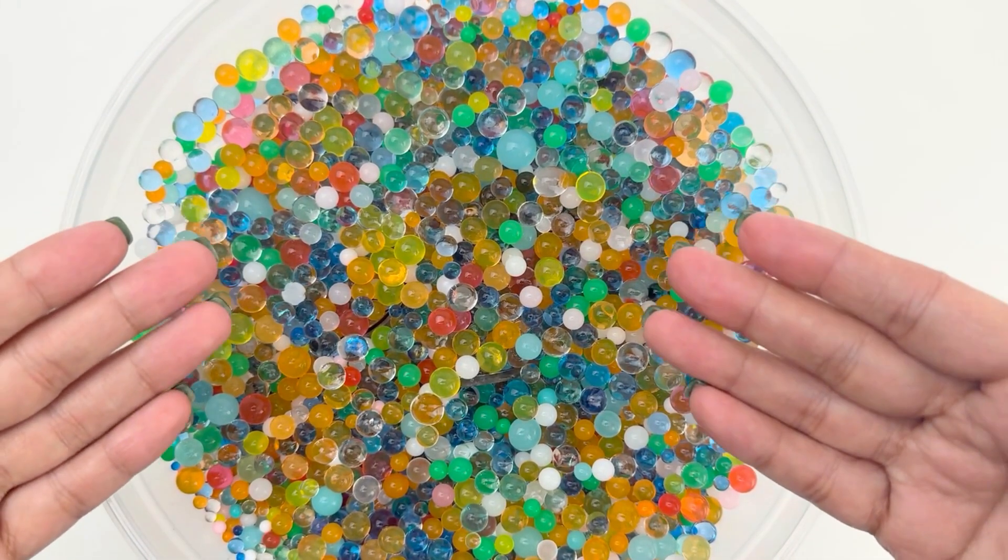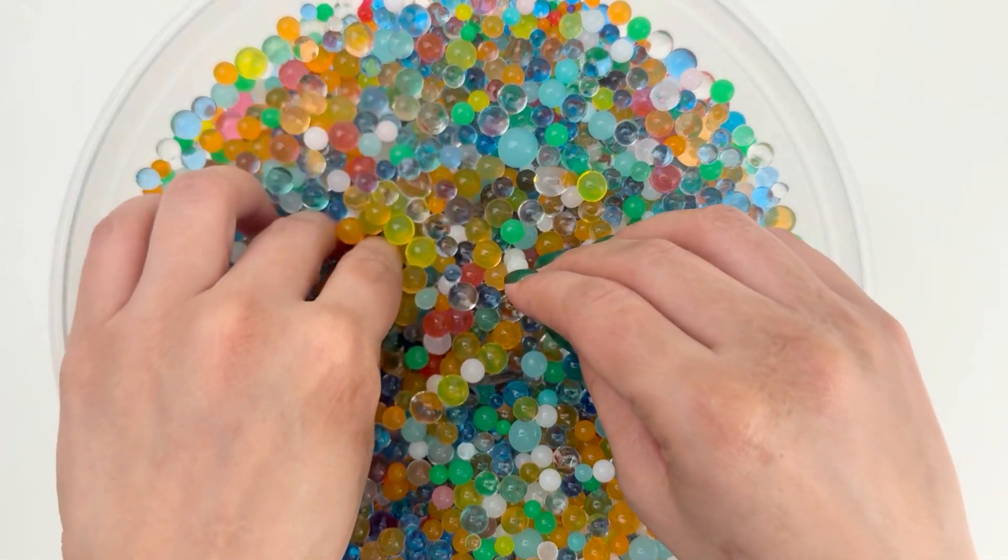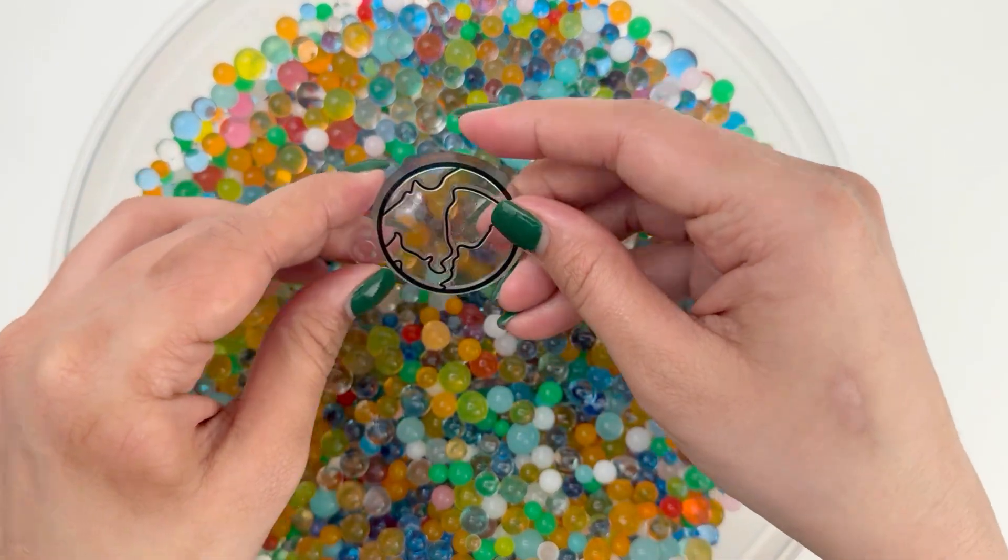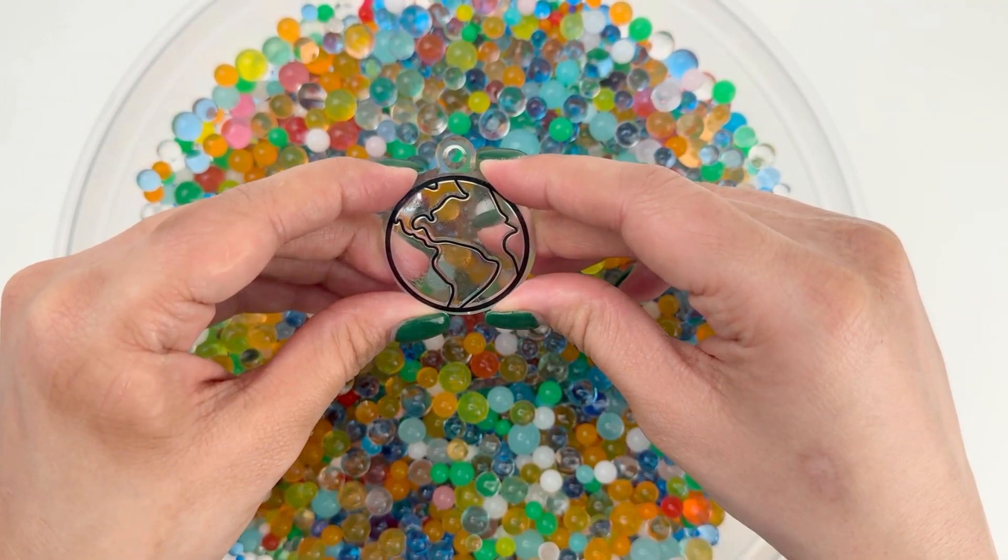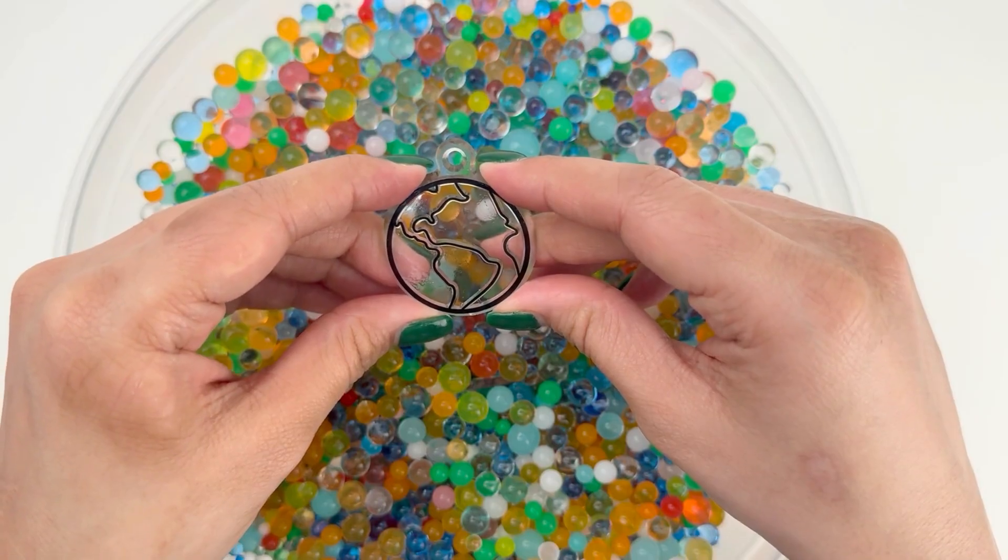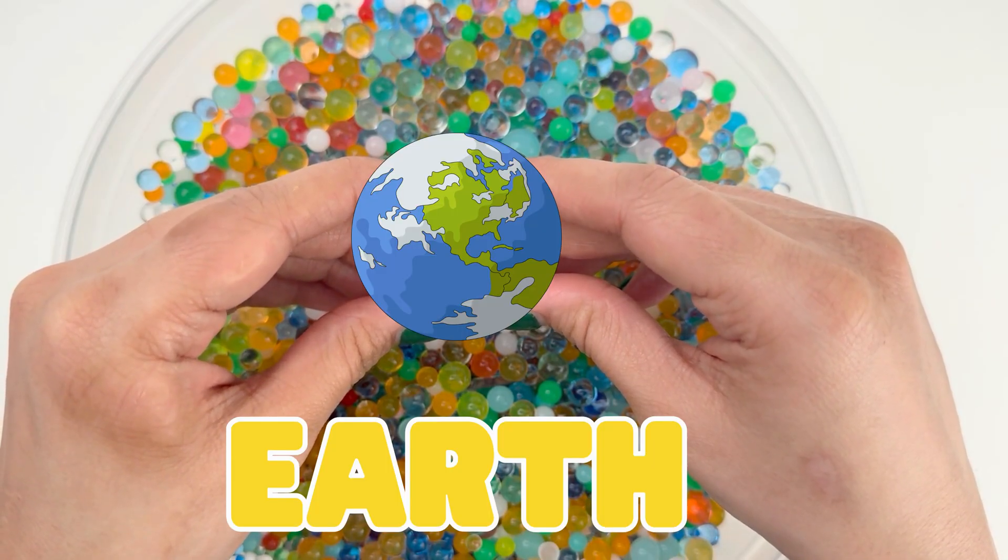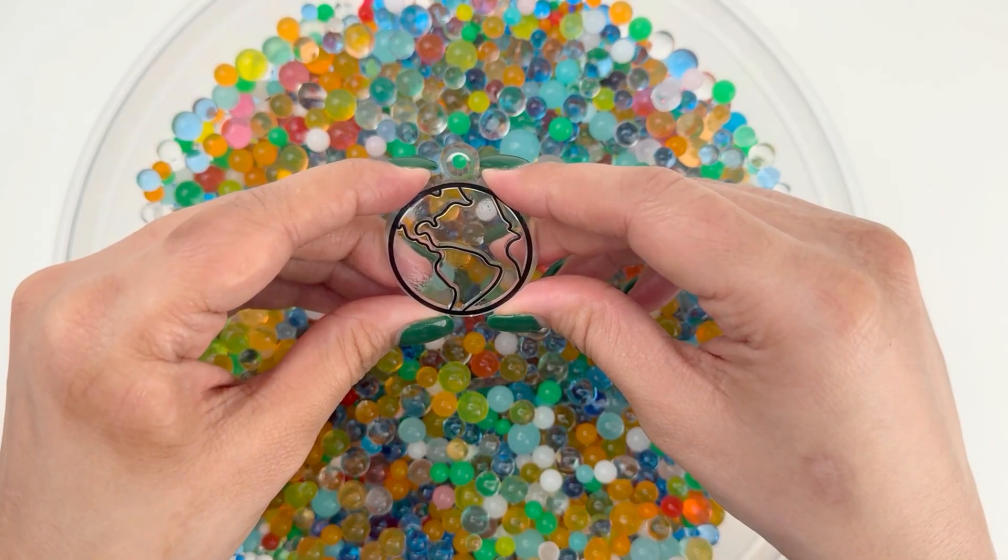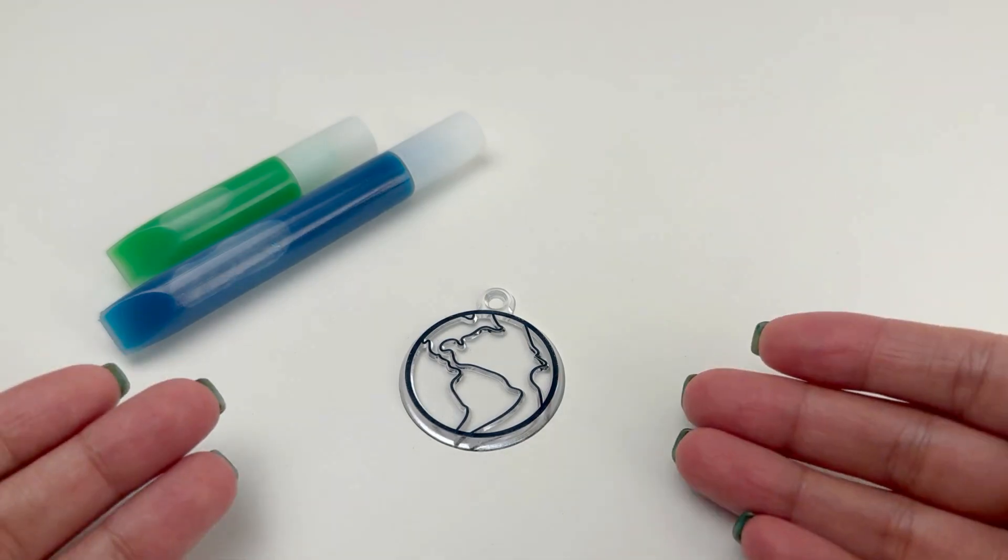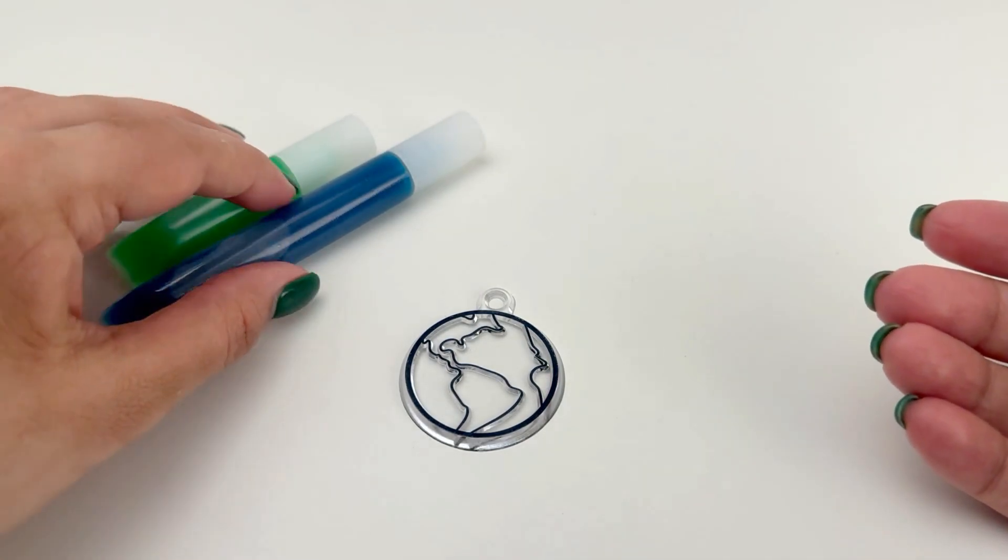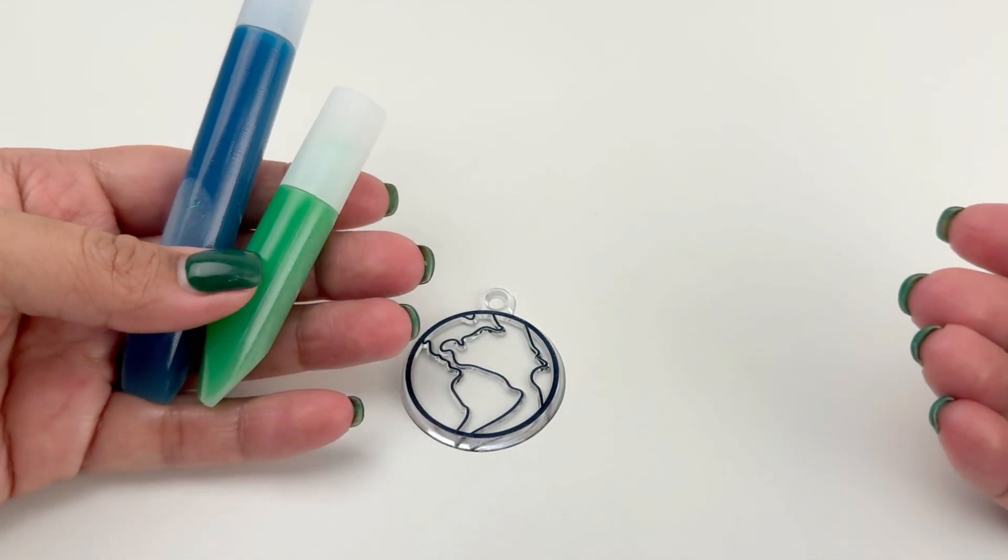Let's find our next planet. This planet feels special. This is the planet where we live. It must be Earth. But Earth lost its colors. Let's color it back. I am going to use blue for water and green for land.